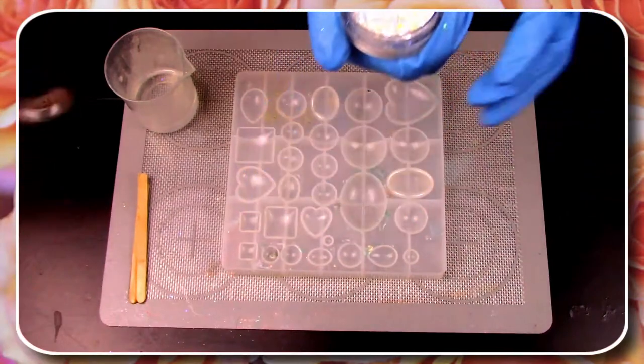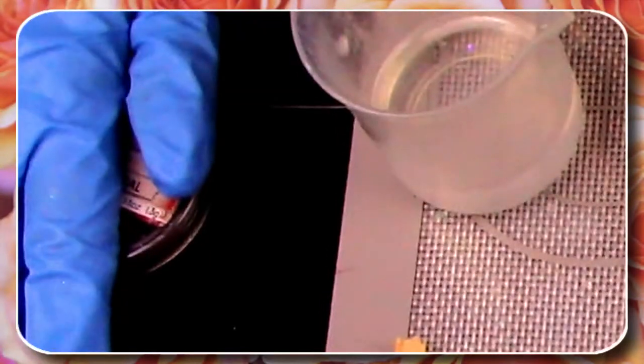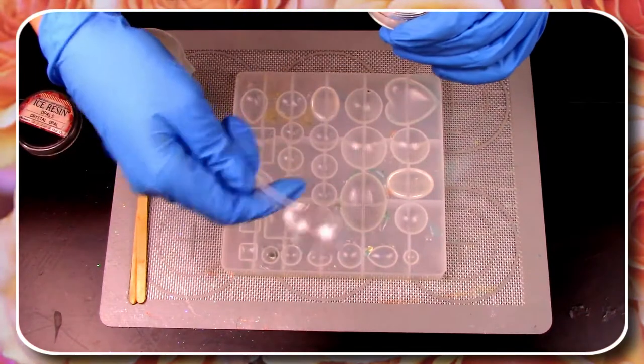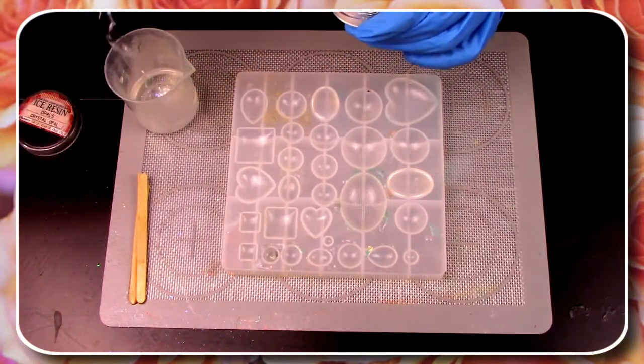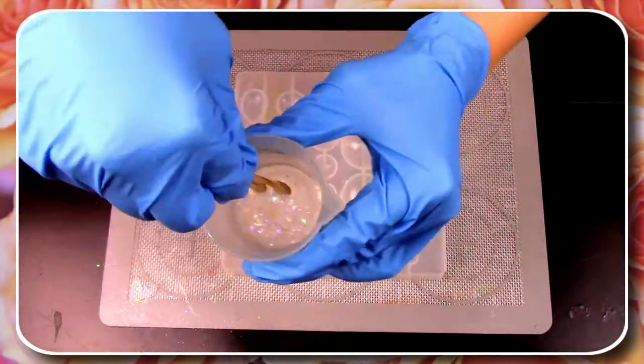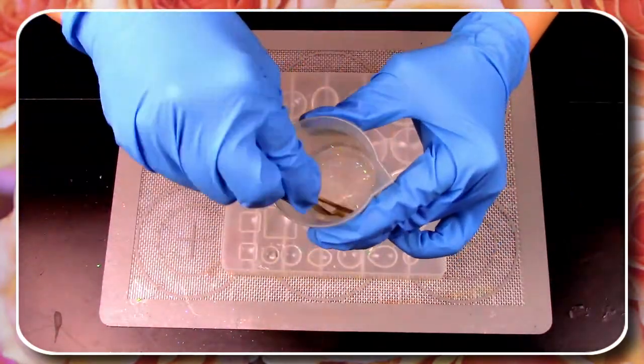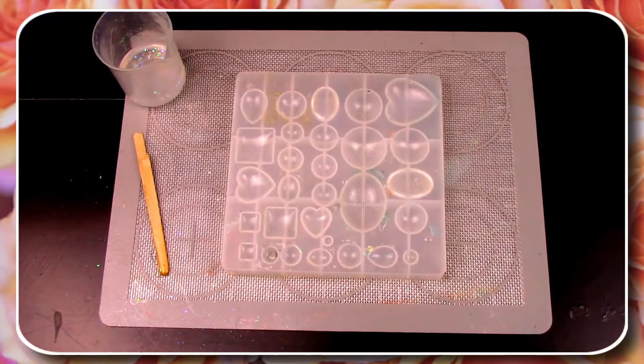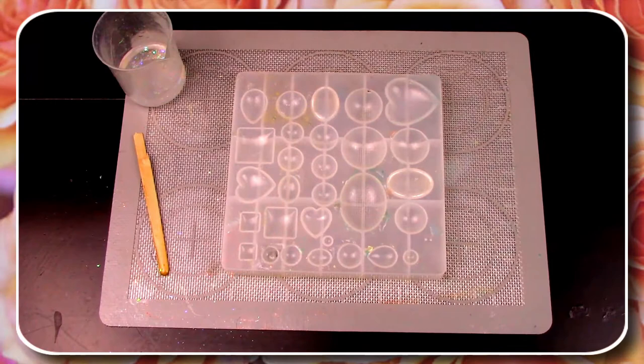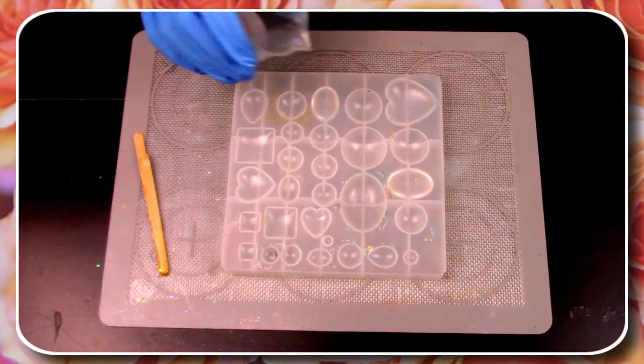Now that our mixture is all ready, it's finally time to put those amazing opal flakes into our mixture and slowly mix them in. Make sure you find the molds that match the same size of that sphere that we traced earlier and pour your resin into those.